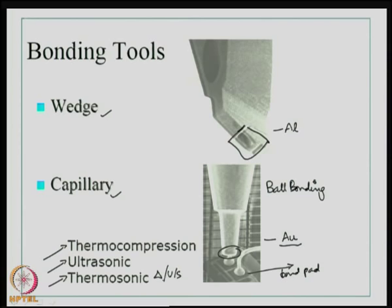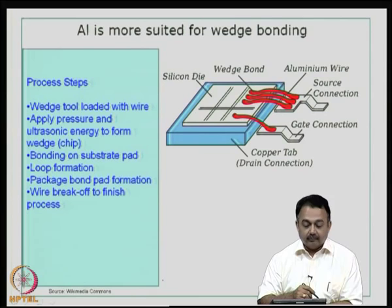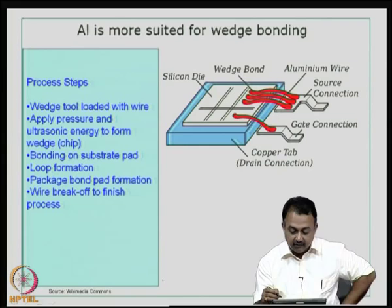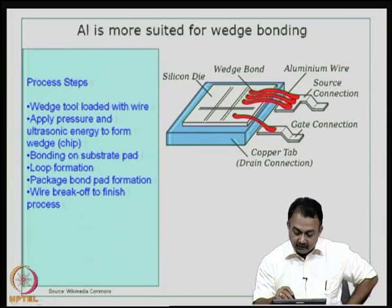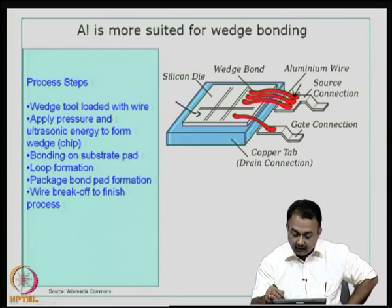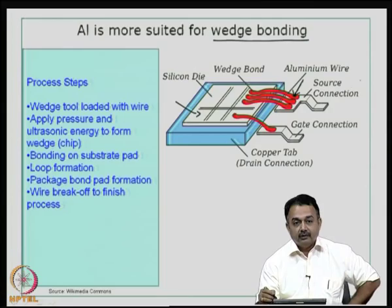If it is a combination of heat and ultrasonic energy, then it is known as thermosonic bonding. Aluminum is more suited for wedge bonding — the reason is aluminum is fairly easy to work with mechanically compared to gold. If you look at this figure, what I am basically trying to show is a wedge bond formed using aluminum wires. This is the silicon die. This is the wedge bond from the bond pad on the silicon die to the lead frame or the leads of the package. You can see a wedge has been formed — at this area you can see the connections are very large, requiring larger area and size. Basically, you cannot expect too much high density using the wedge bonding process.